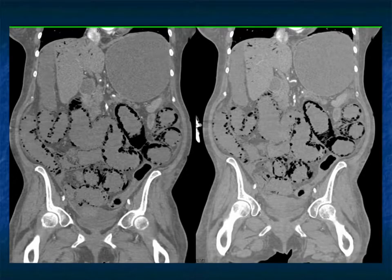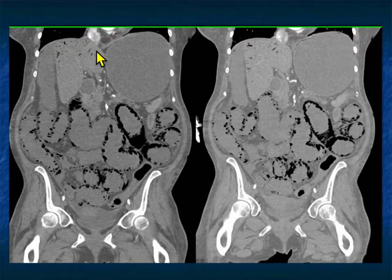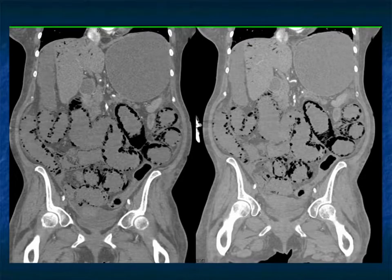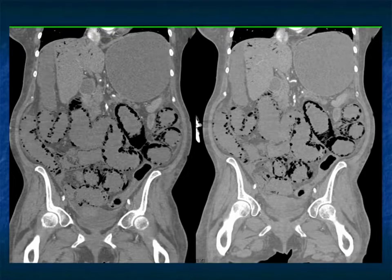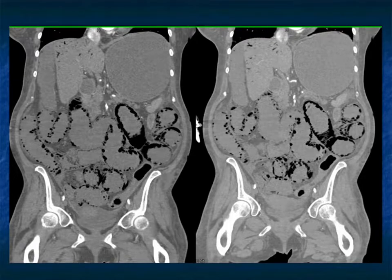Here it is in the coronal view. You also see portal venous air, which is another bad sign. Portal venous air is not necessarily always fatal, but it means you likely have infarcted bowel. Caught early enough, you can still save the patient, but it is a very ominous sign.